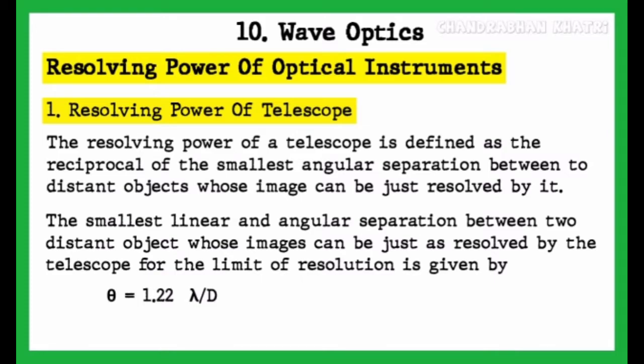Resolving Power of Optical Instruments. The resolving power of a telescope is defined as the reciprocal of the smallest angular separation between two distant objects whose image can be just resolved by it. The smallest angular separation between two distant objects whose images can be just resolved by the telescope — the limit of resolution — is given by theta equals 1.22 lambda upon capital D.